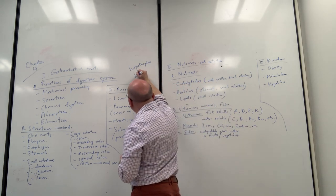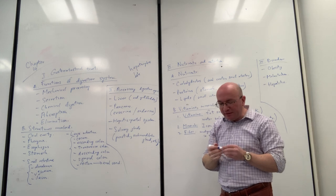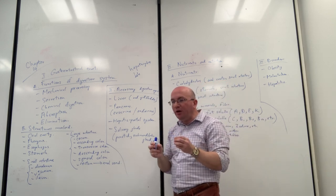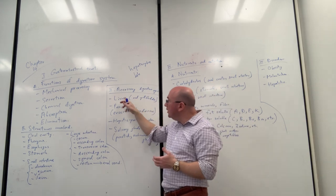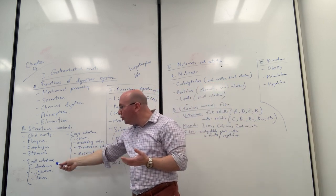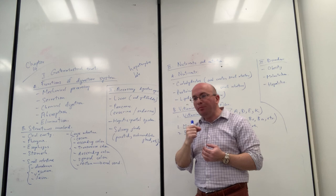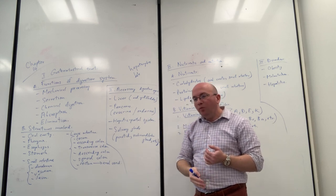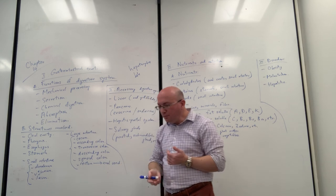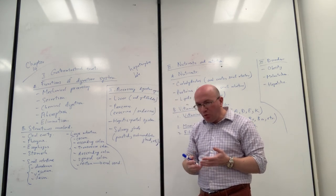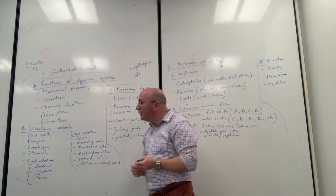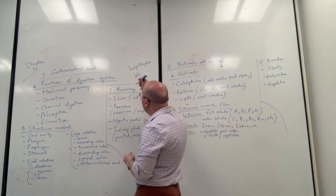The liver also produces bile, which contains bile acids that break down fats — fatty acids and lipids. These molecules are long, insoluble in blood, and need to be treated in a more complicated manner. The liver secretes bile, which goes to the gallbladder for storage. The gallbladder is connected to the duodenum via the common bile duct, so when you eat a fatty meal, bile is released from the gallbladder into the duodenum to mix with fats and make them more easily absorbed.